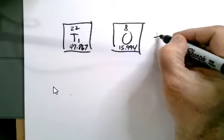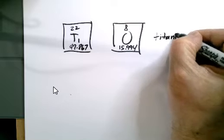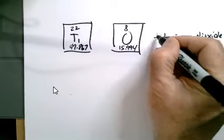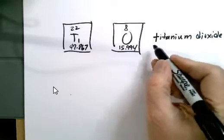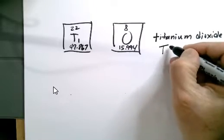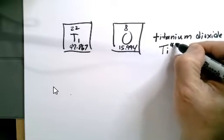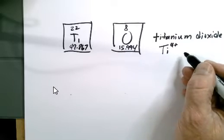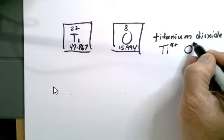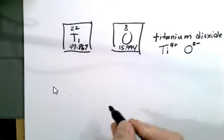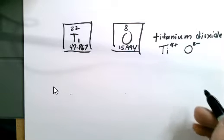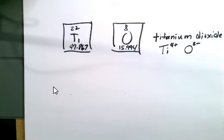When we look titanium up on the periodic chart, it is Ti4+, or plus 4, with an oxidation number of plus 4. And oxygen is negative 2. Oxygen is always negative 2, except in peroxides where it's negative 1, but on the chart it says negative 2.